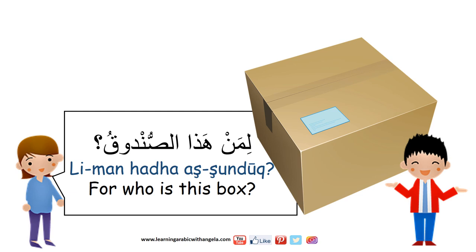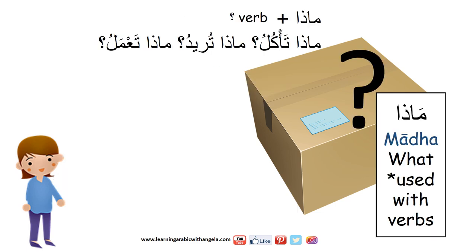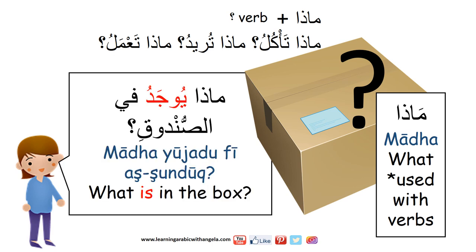لمن — 'For who.' لمن هذا الصندوق؟ — For who is this box? هذا الصندوق لي — This box is mine. ماذا is a question tool that means 'what' and it's mainly used with verbs. ماذا يوجد في الصندوق؟ — What's in the box? You can use ماذا plus a verb to ask other questions: ماذا تأكل — What do you eat? ماذا تريد — What do you want? ماذا تعمل — What do you do for a living?